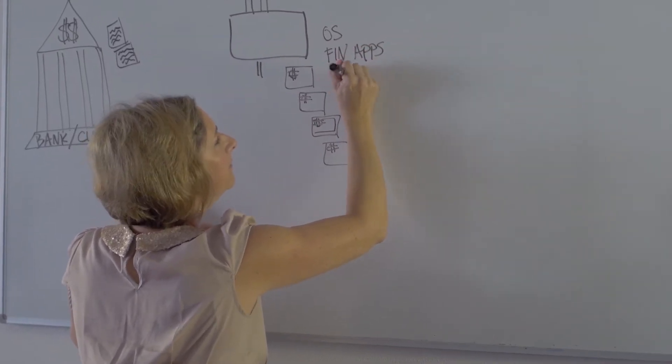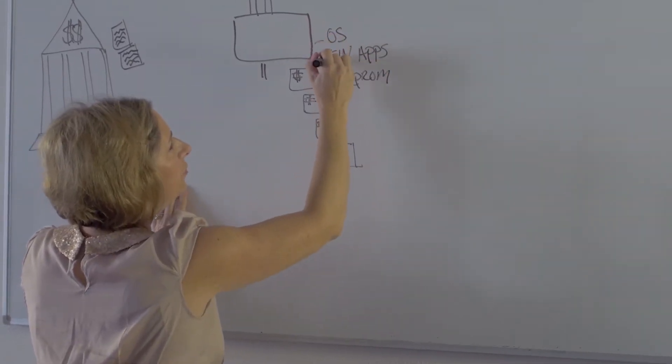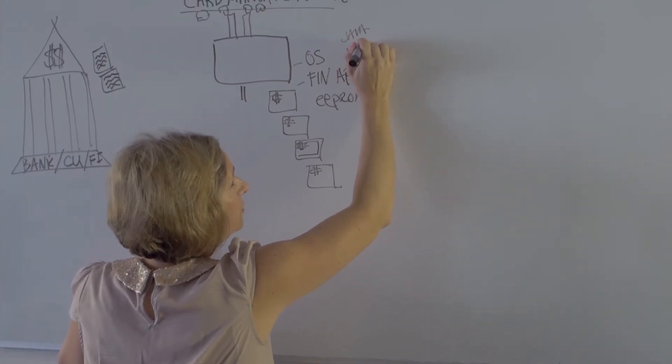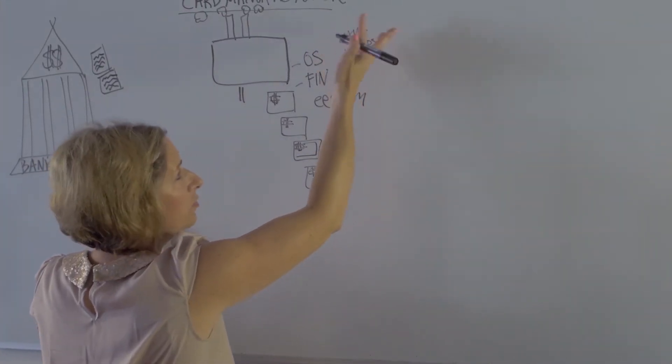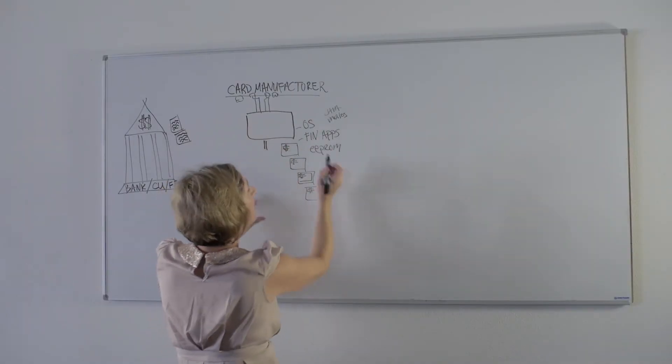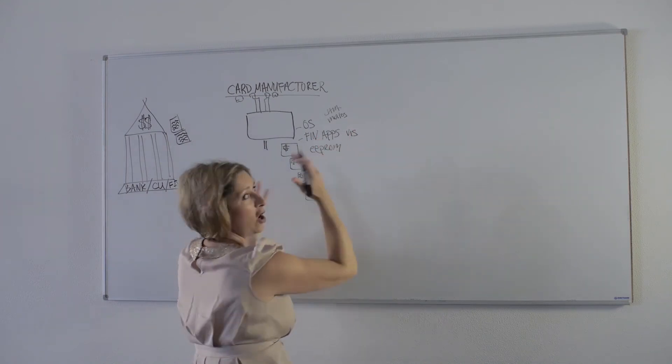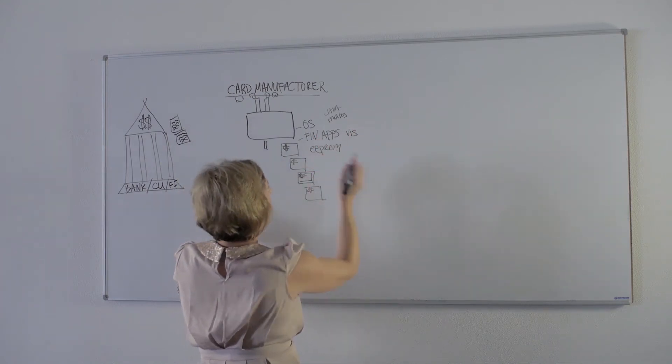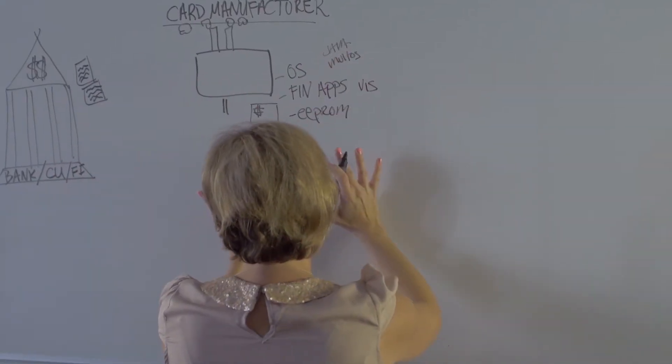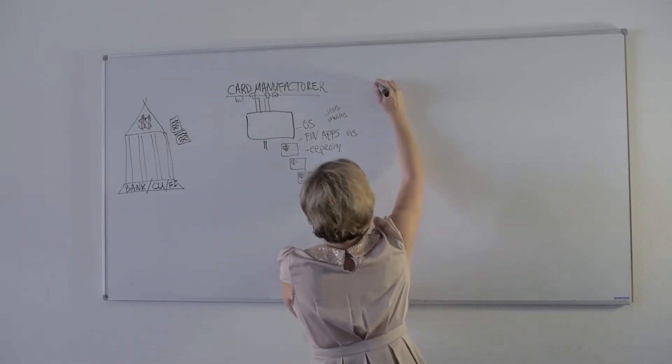On these chip cards of course you have an operating system, you have financial applications, you have memory. The operating system would be like Java or Multos. It's either a Java or Multos operating system on the chip on the card that the manufacturer is making. You have the financial applications like from Visa it's called VIS, for MasterCard it's called M-Chip. And the next deliverable after the manufacturing of the plastic and the pre-personalization of this chip is personalization.